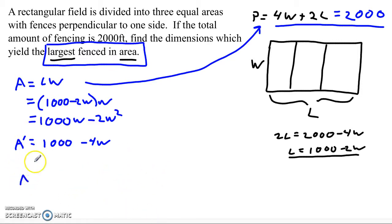So, area, well, let's just factor first. 1,000 minus 4W, don't even need to factor. 1,000 is equal to 4W, which means I have only one critical point. That's at W equals 250.